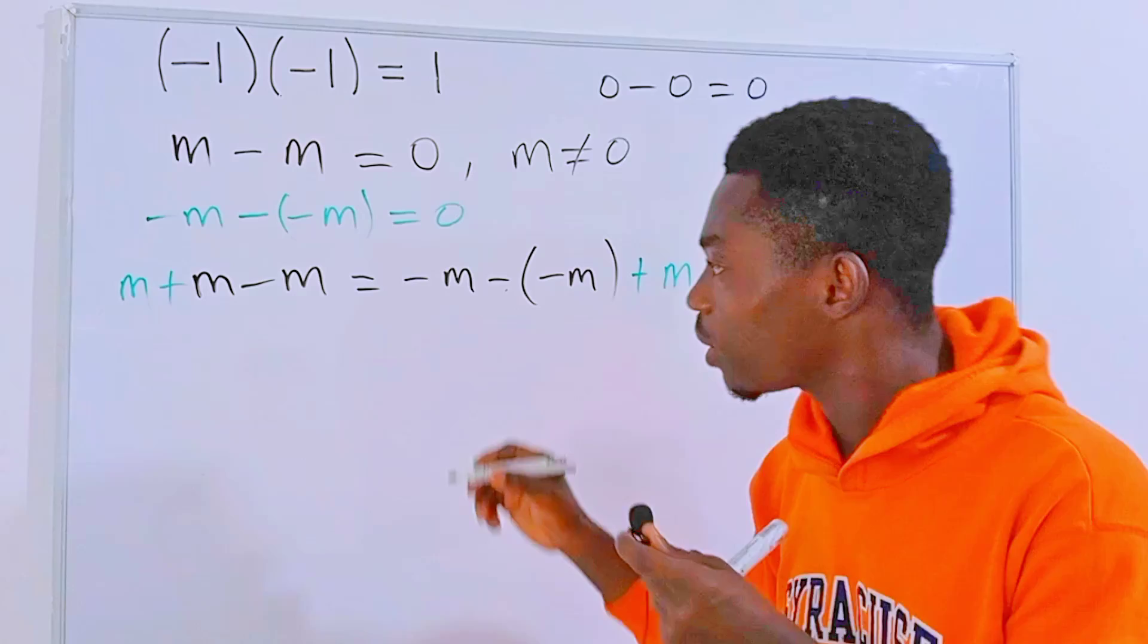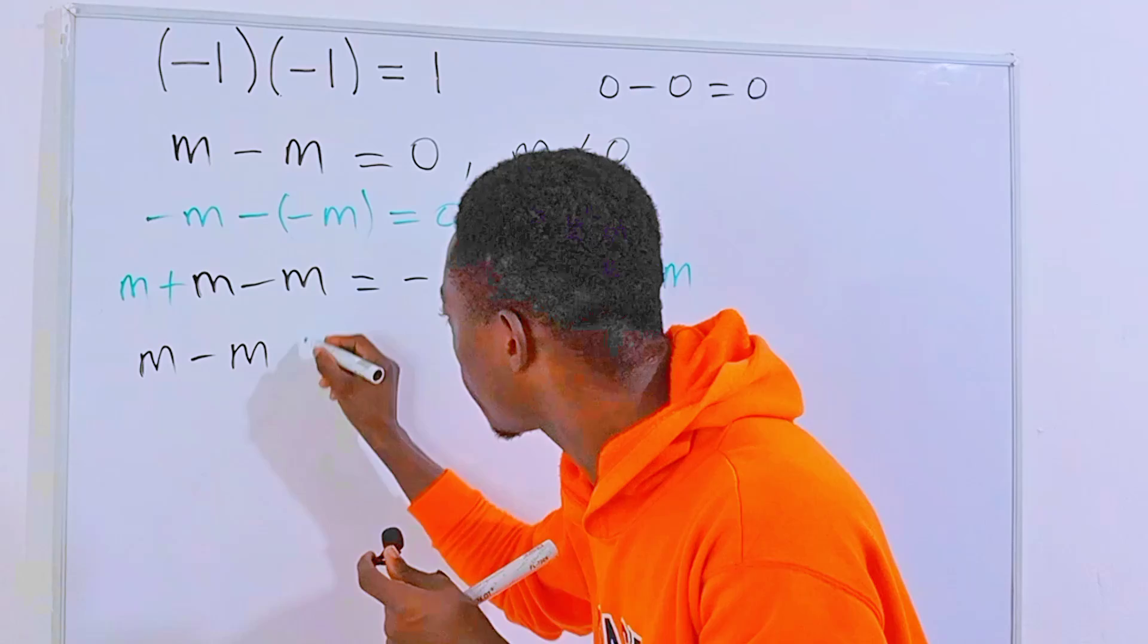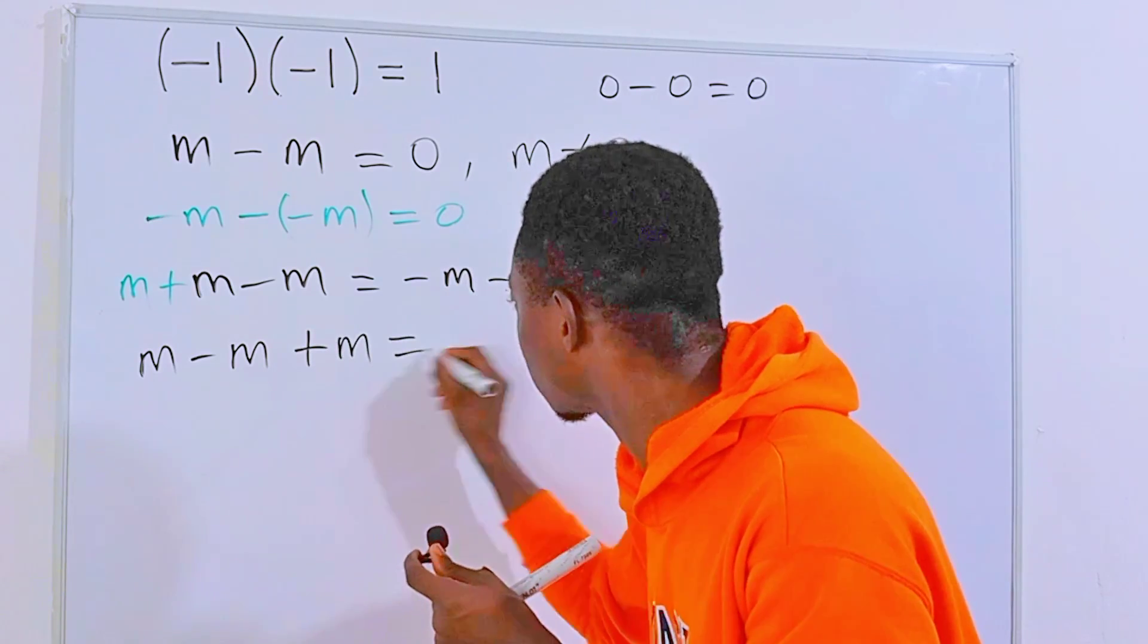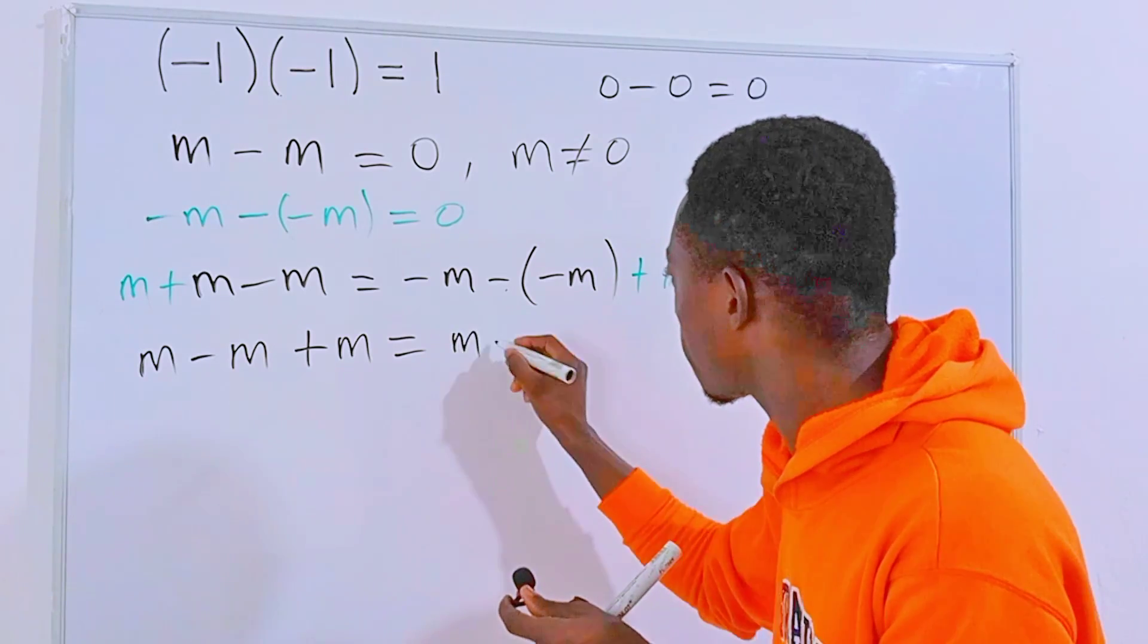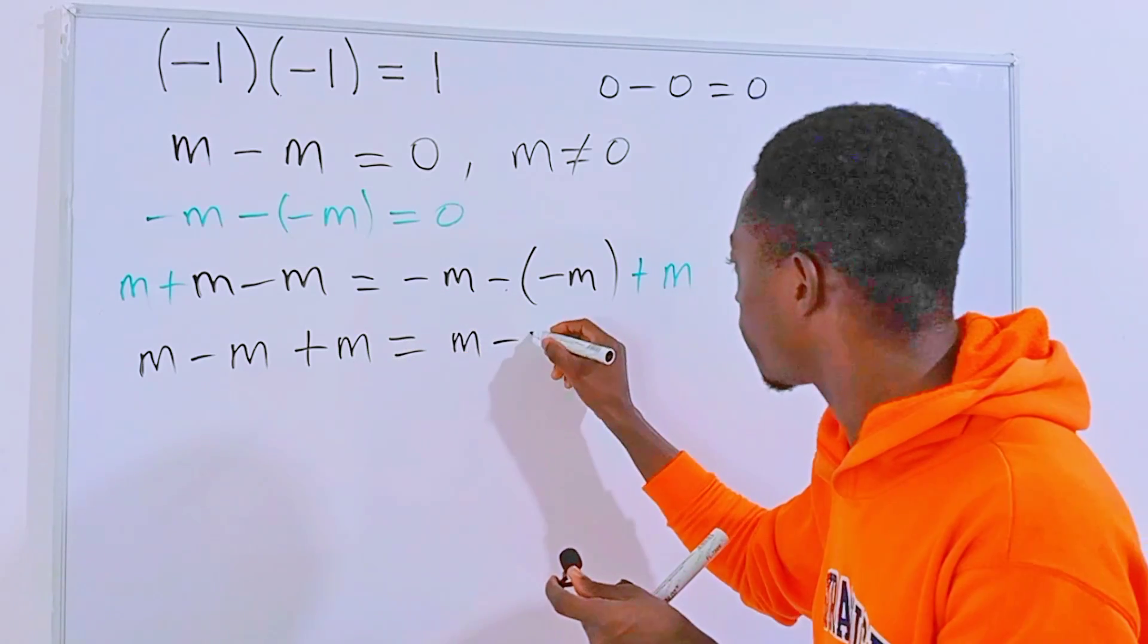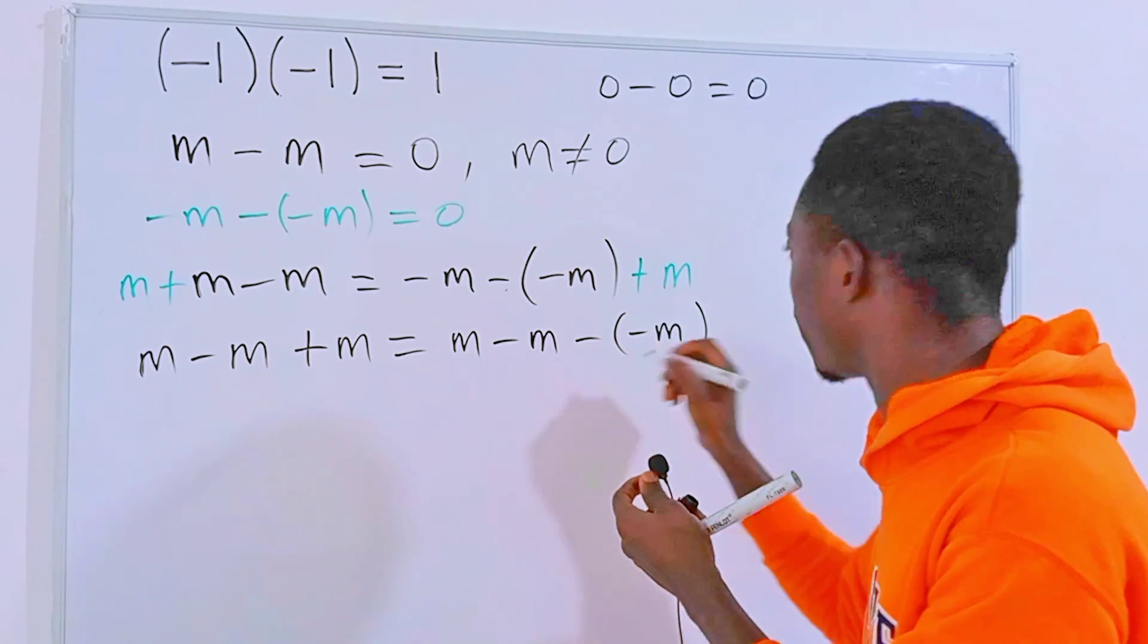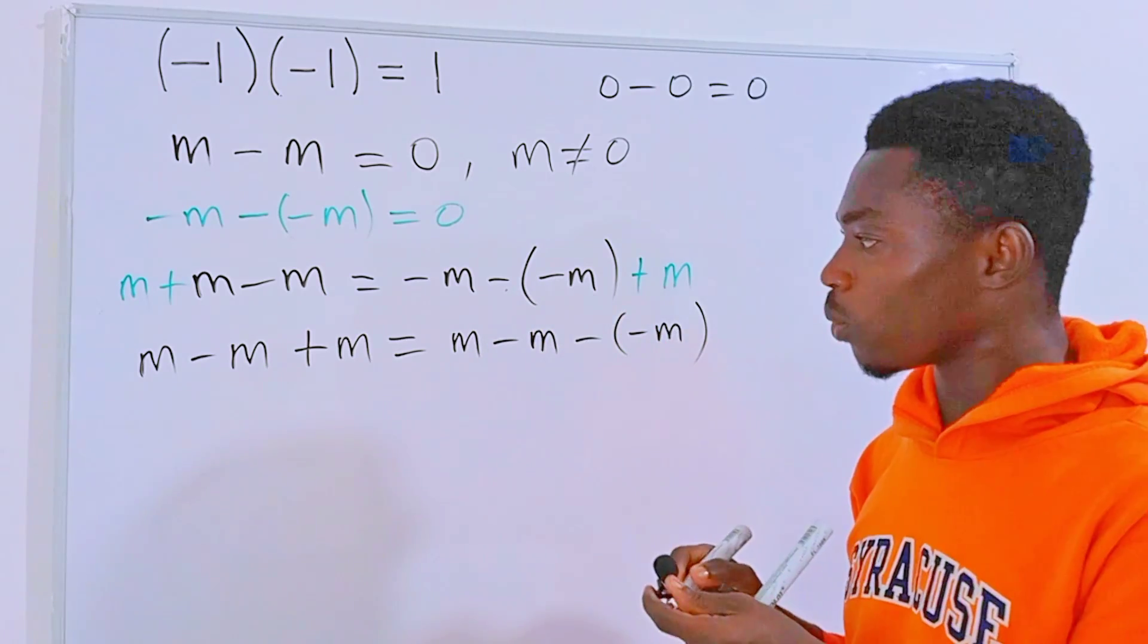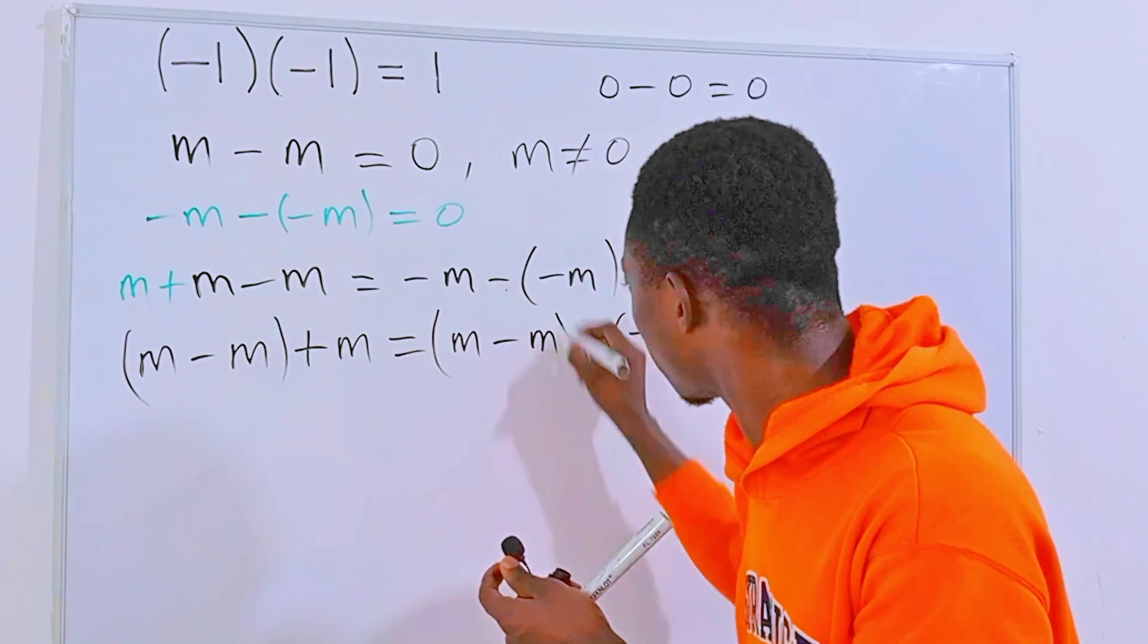And now we can rewrite this equation in such a way that we can have m minus m plus m right here, and this is equal to this m over here minus this m, then minus minus m.